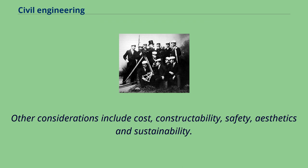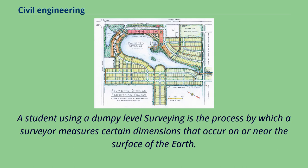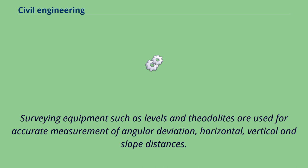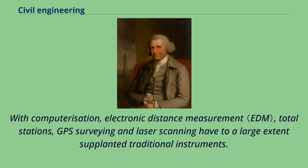Surveying is the process by which a surveyor measures certain dimensions that occur on or near the surface of the earth. Surveying equipment such as levels and theodolites are used for accurate measurement of angular deviation, horizontal, vertical and slope distances. With computerization, electronic distance measurement, total stations, GPS surveying and laser scanning have to a large extent supplanted traditional instruments.